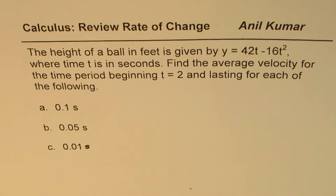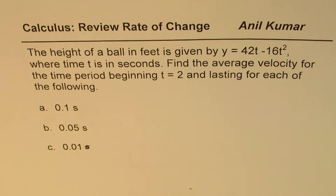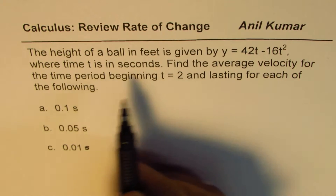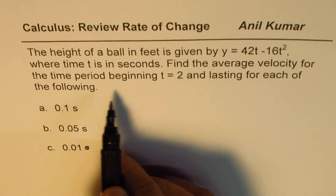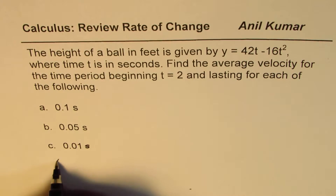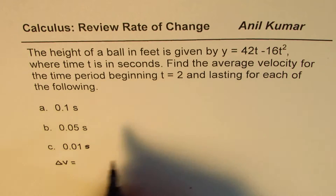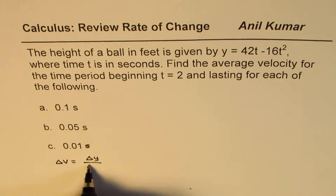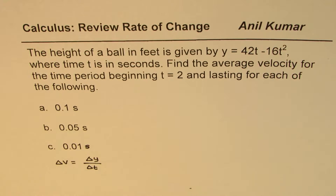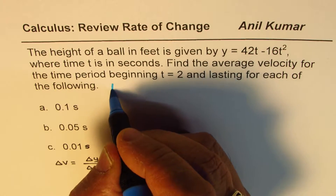What we are given here is an equation which can give us the displacement — change in position — and we are also given the time interval. Velocity, the average velocity, is actually equal to change in distance, which is delta y, over change in time. That is how we are going to find the average velocity. Let's make columns to make our job simple.